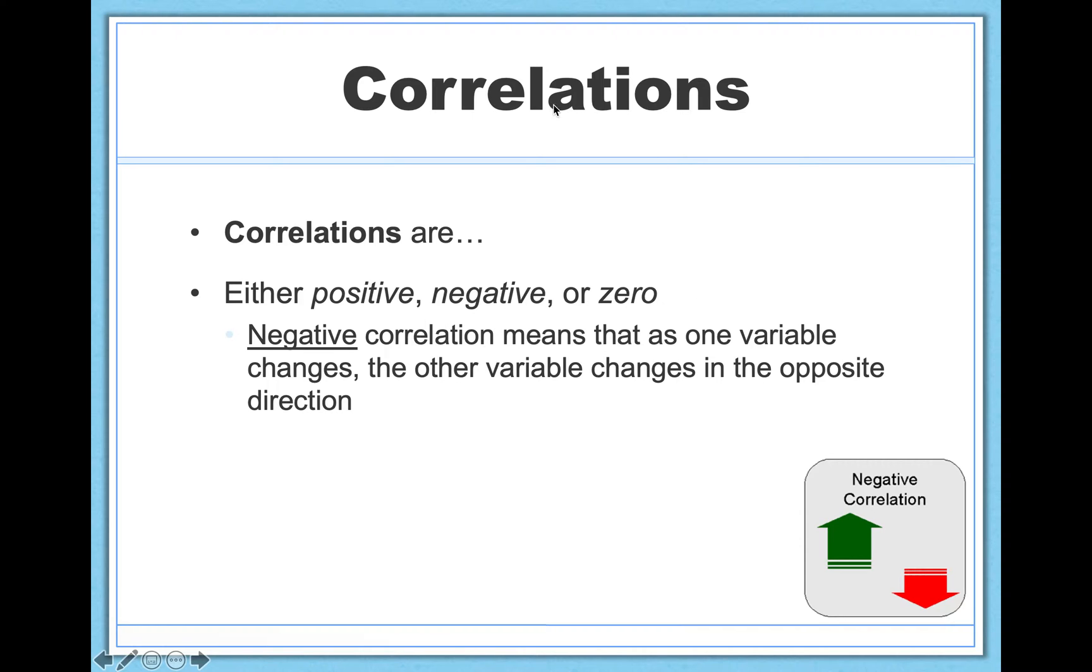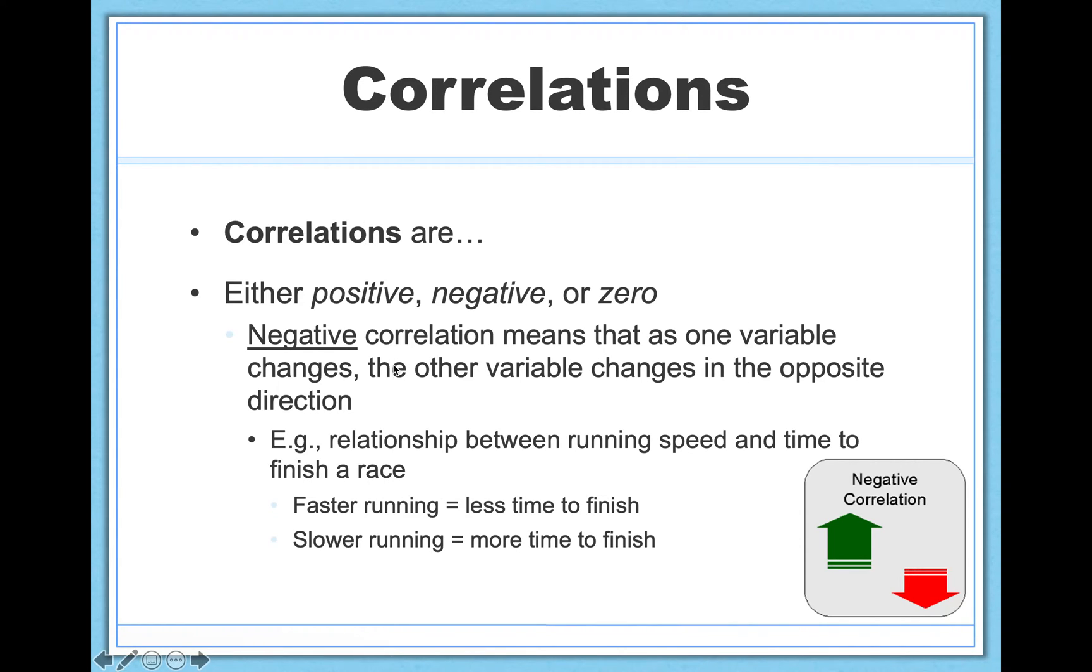And finally, we have our negative correlation. This is the one I tend to see the most mistakes on, the most confusion about. Negative correlations simply mean that as one variable changes, the other variable changes in the opposite direction. So here's an example.